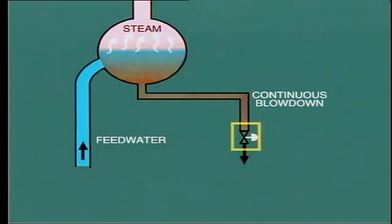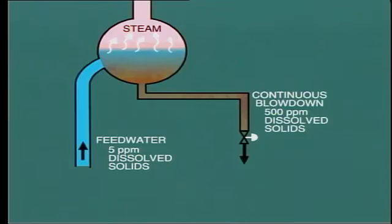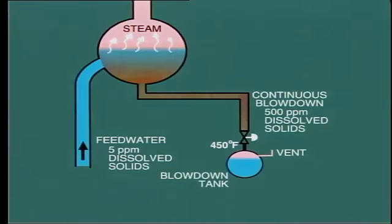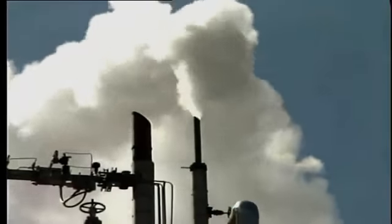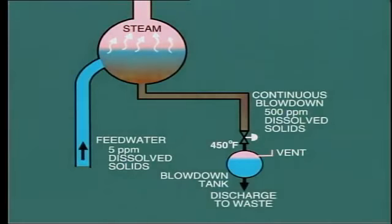One method to reduce the concentration of solids is by continuous blowdown — a regulated quantity of water discharged from the bottom of the drum to waste. A control valve is fitted to allow regulation of the quantity of continuous blowdown. The blowdown water may contain 500 parts per million of solids, and this is replaced by boiler feed water which contains perhaps 5 ppm — resulting in dilution with consequent reduction in total solids concentration. As the blowdown water is at relatively high temperature between 400 and 500 degrees Fahrenheit, it is discharged into a blowdown tank. This permits some of the high-temperature water to flash off into steam and be vented to atmosphere, with the remaining water discharged to waste.